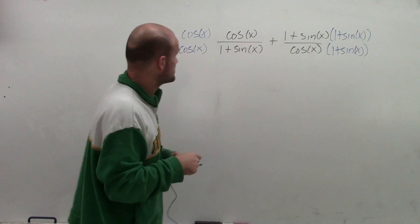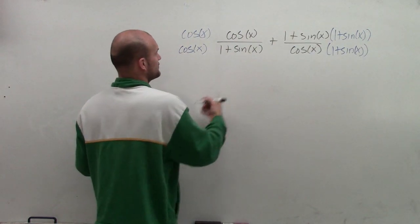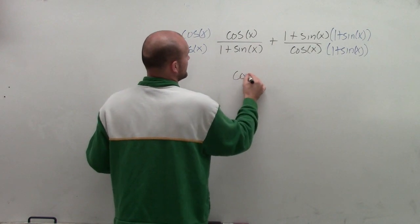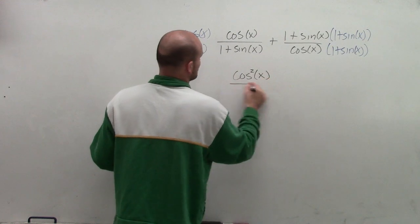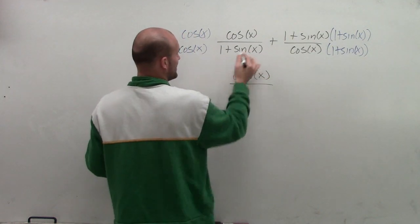So now what I'm going to do is distribute through. Cosine times cosine is cosine squared of x, all over, multiply, distribute this through.